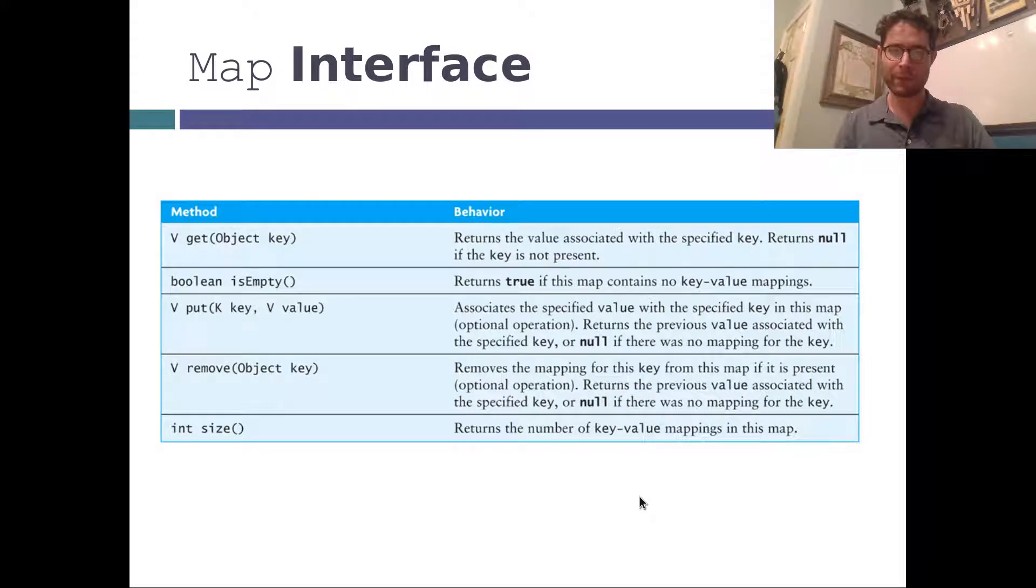So the map interface, the way that works is that we, unlike the set, have only a small amount of methods, which is actually very surprising considering I just said that this is the most powerful data structure on Earth. We only have really three methods of concern here. Int size returns the number of key value mappings. And isEmpty. Those are obvious.